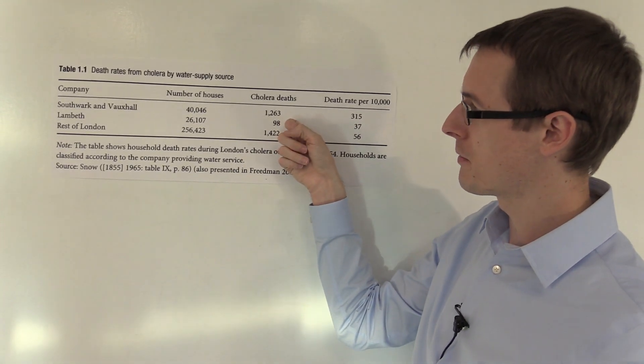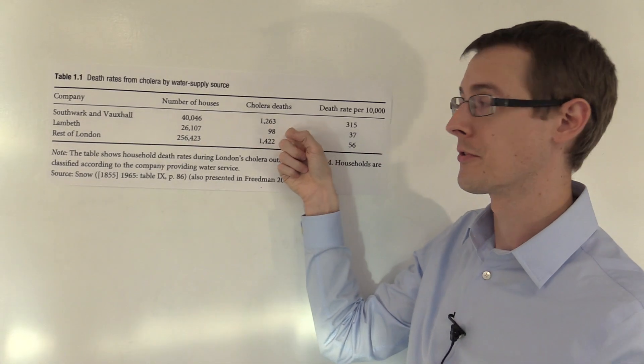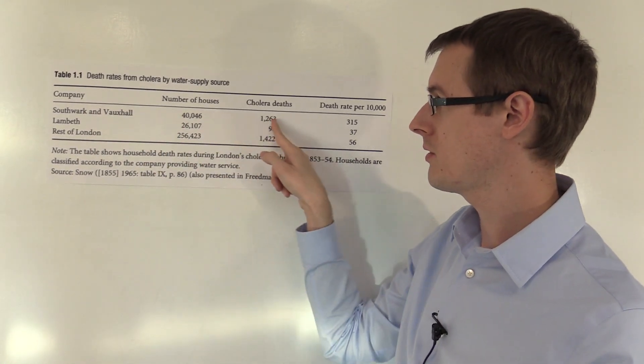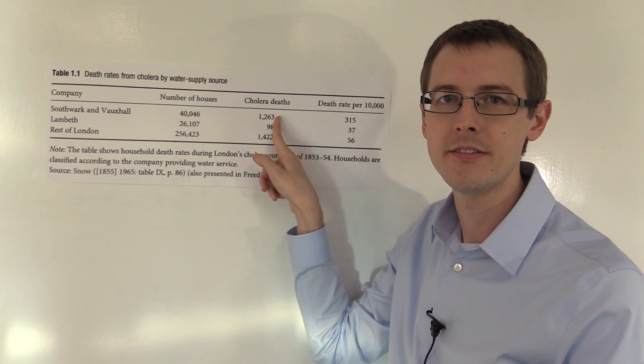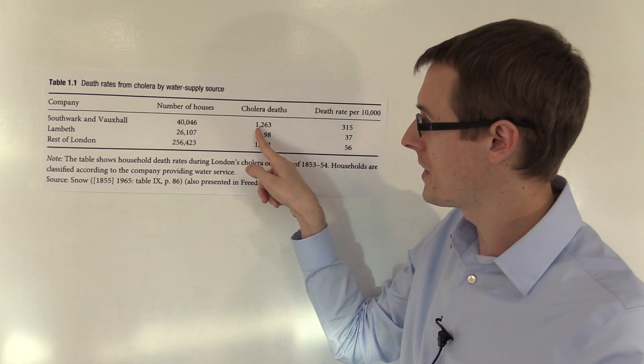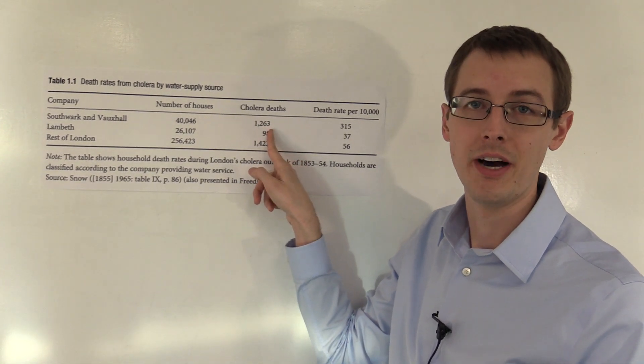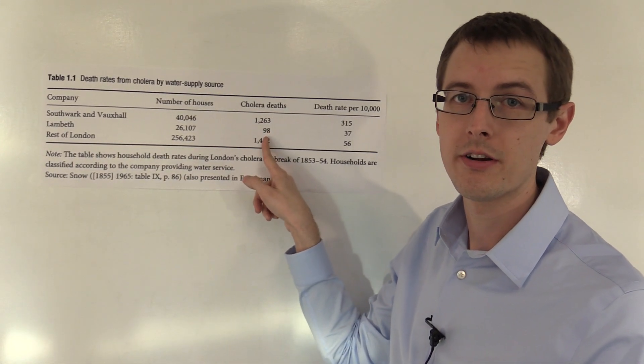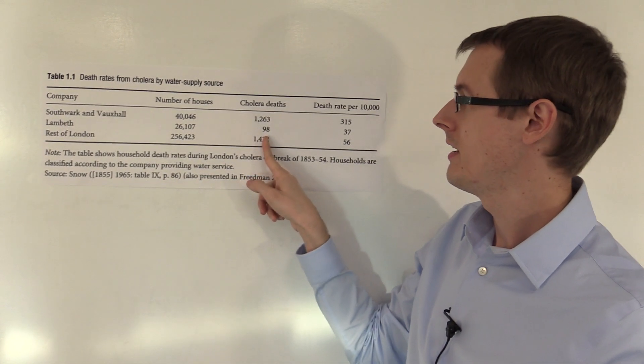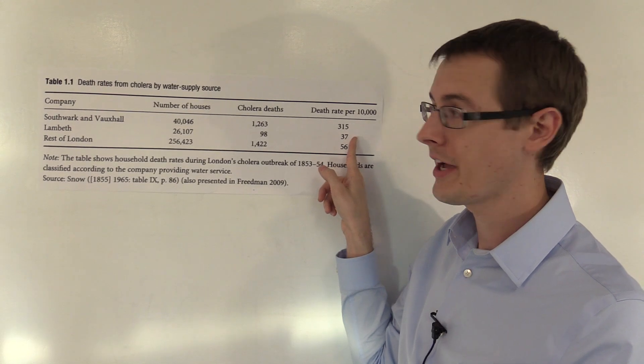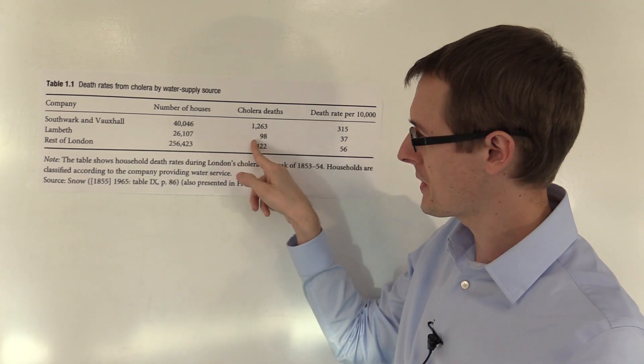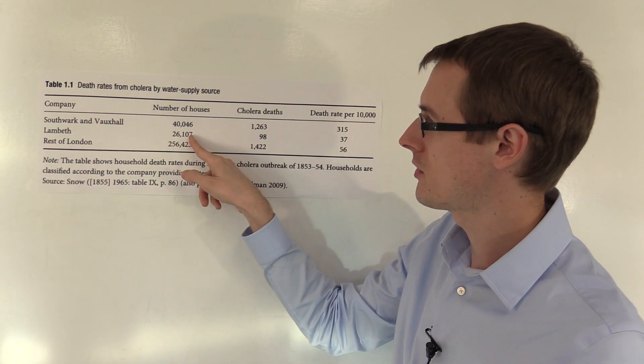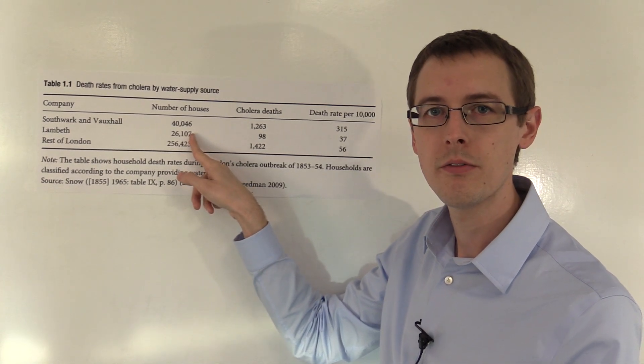Here we've got the number of people who died from cholera in each of the groups. In Southwark and Vauxhall, the people who are drinking sewage water, about 1,263 people died. For Lambeth, the people who were drinking clean water, 98 people died. If we look at the rates, you can't directly compare these numbers because there's different total number of people for these different companies.